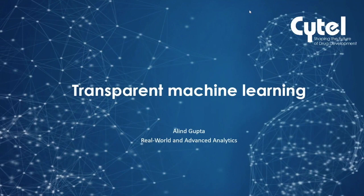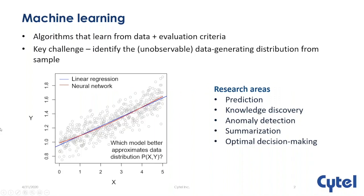Thanks, Asha, for the introduction. I'm going to start by talking a little bit about machine learning broadly and then discuss why transparency is important in machine learning — what it is, both as a foundational notion in machine learning but also from a regulatory perspective. And then finally, I'll describe an ongoing project where we've used a transparent machine learning method called Bayesian networks for problems in advanced cancer therapy.